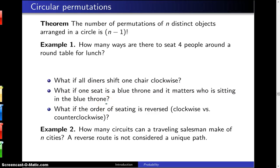So example one says how many ways are there to seat four people around a round table for lunch? And the easy answer to this is to just say in this case there are n equals four people that are going to sit around the round table.